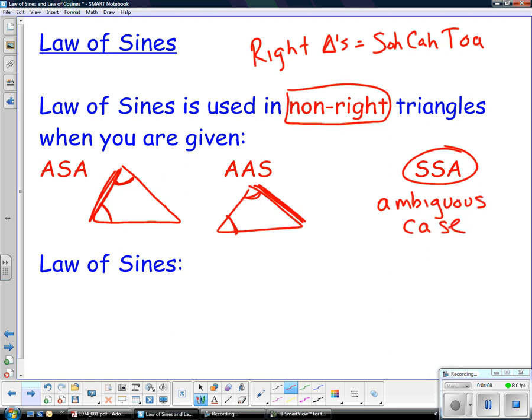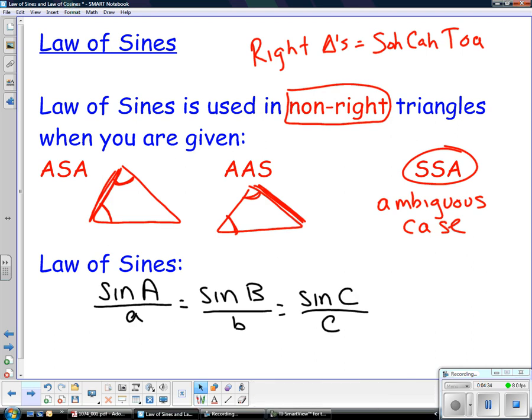We're going to get to that when you get to pre-calculus. We're not going to really deal with that case. We're just going to deal with the other two cases. And again, our law of sines is the sine of angle A over the side opposite of that angle, the sine of angle B over the side opposite of B, the sine of angle C over the side opposite of C. And yes, I expect you to remember that formula.